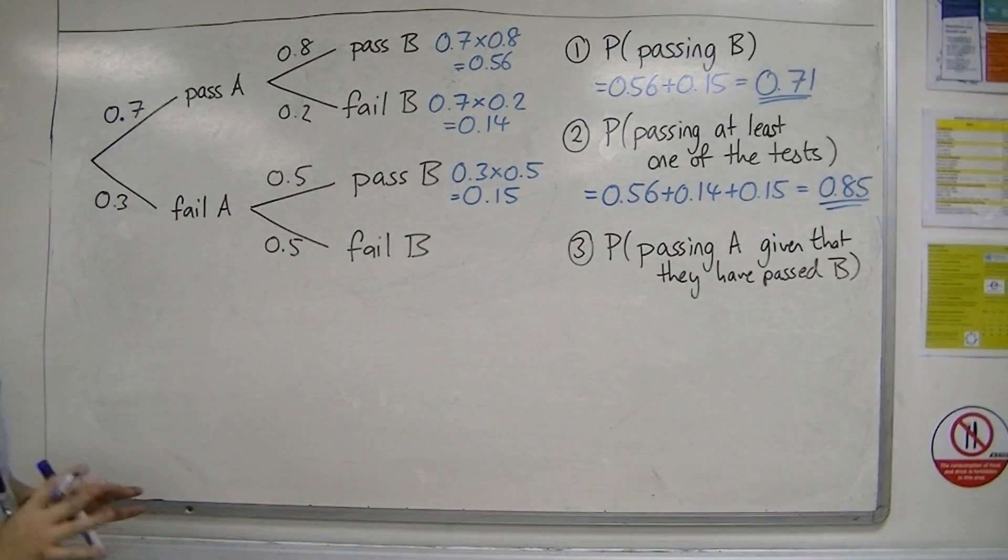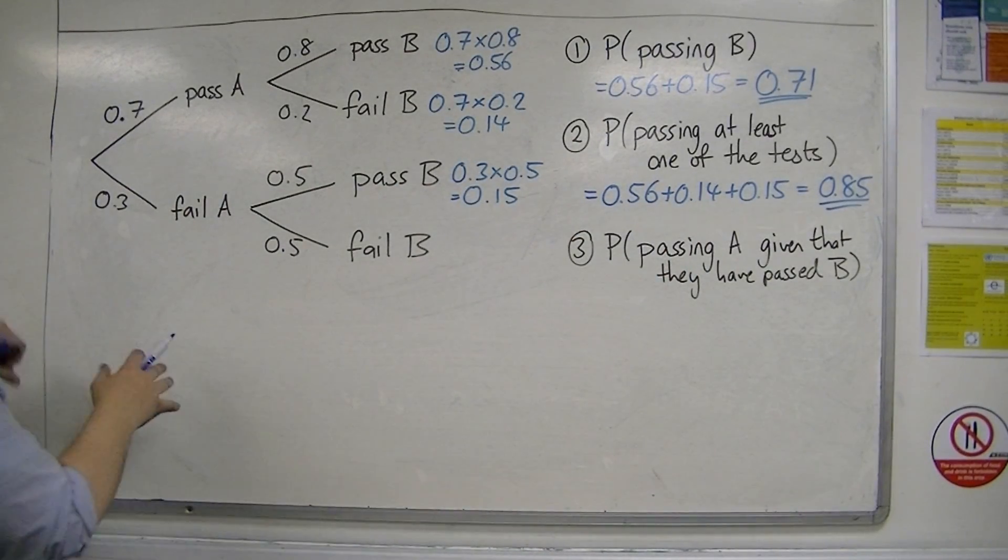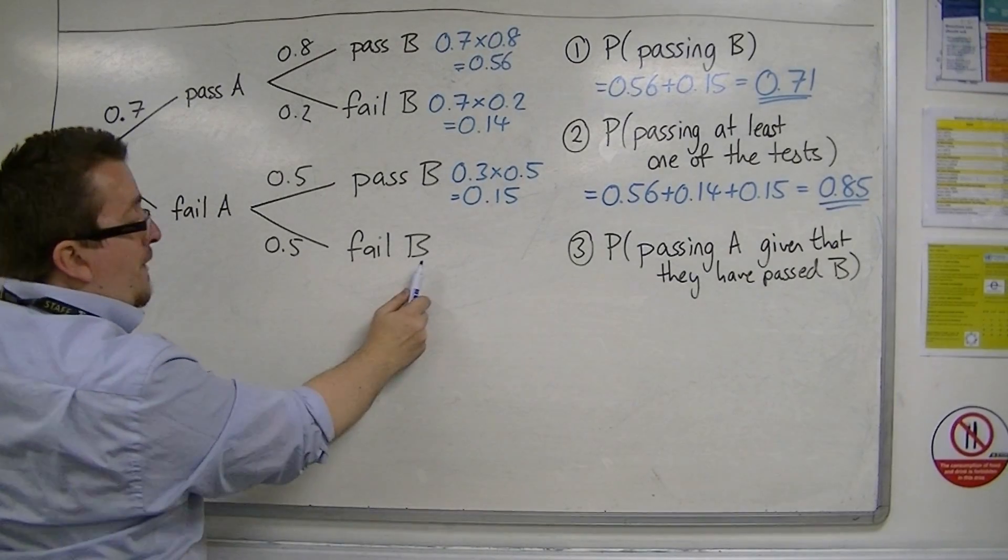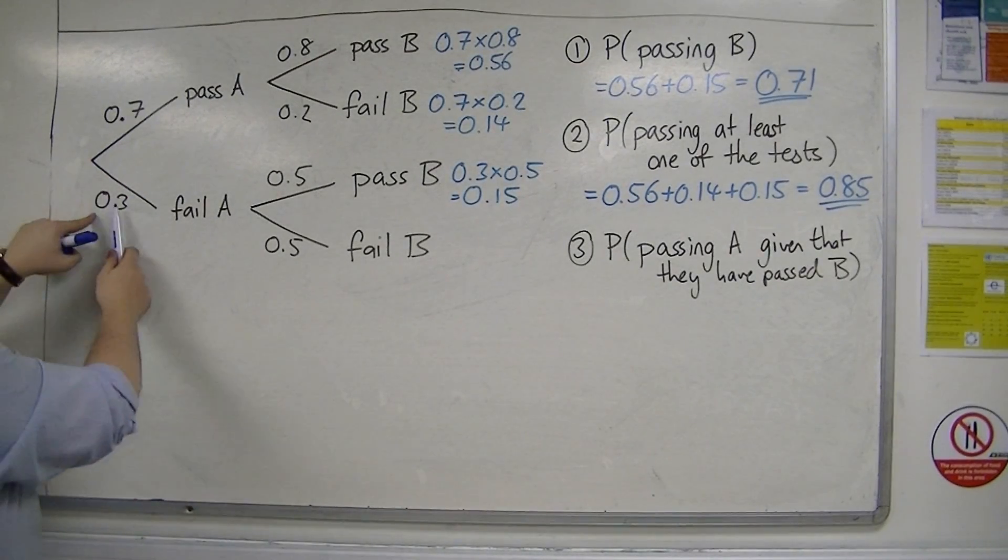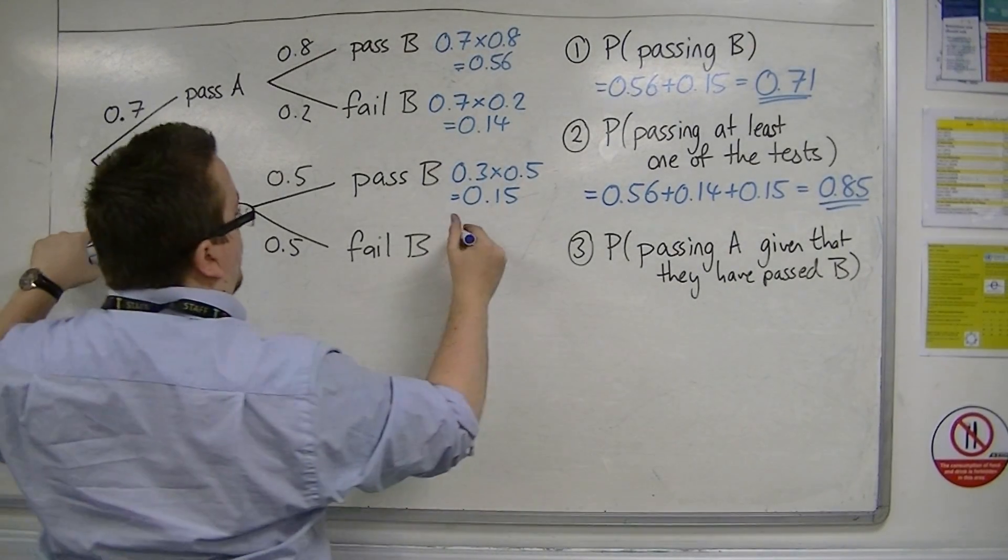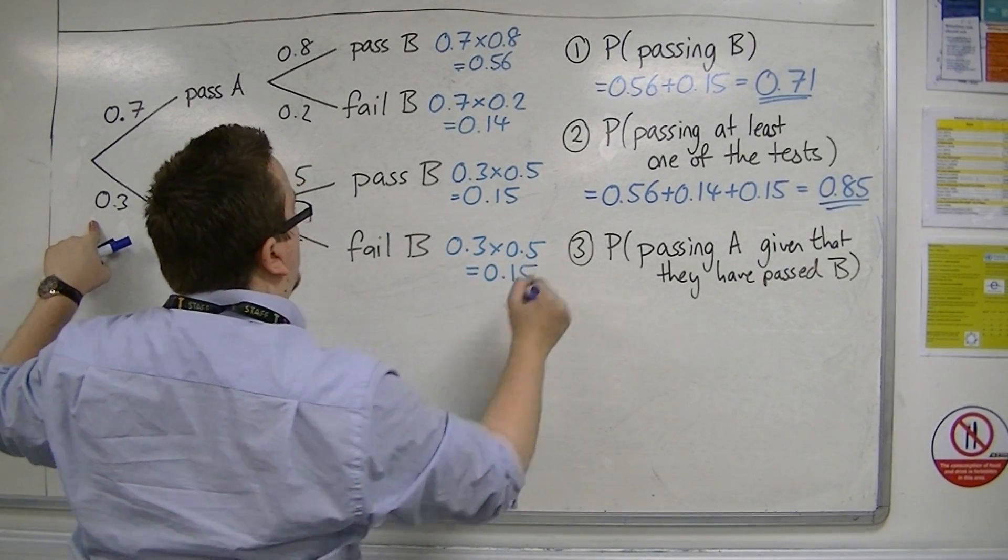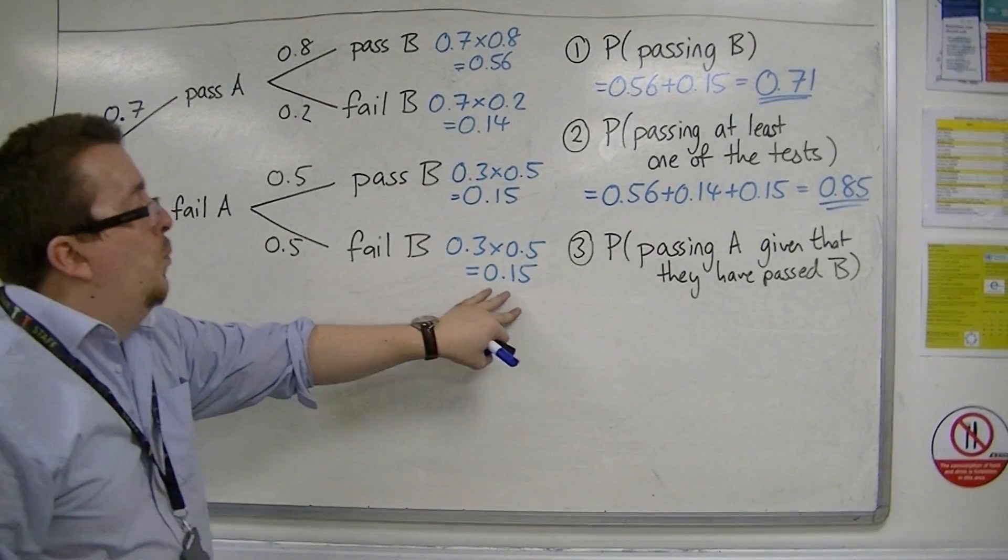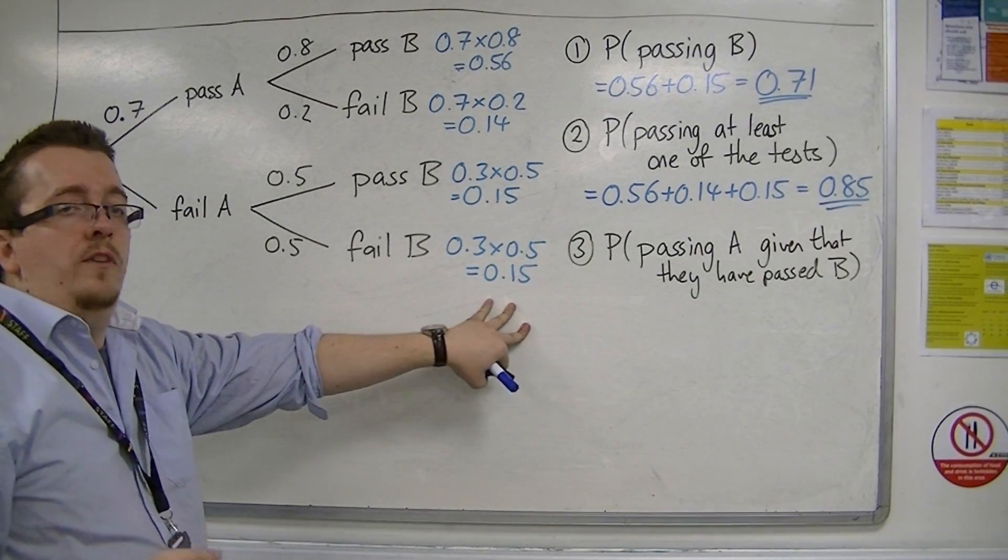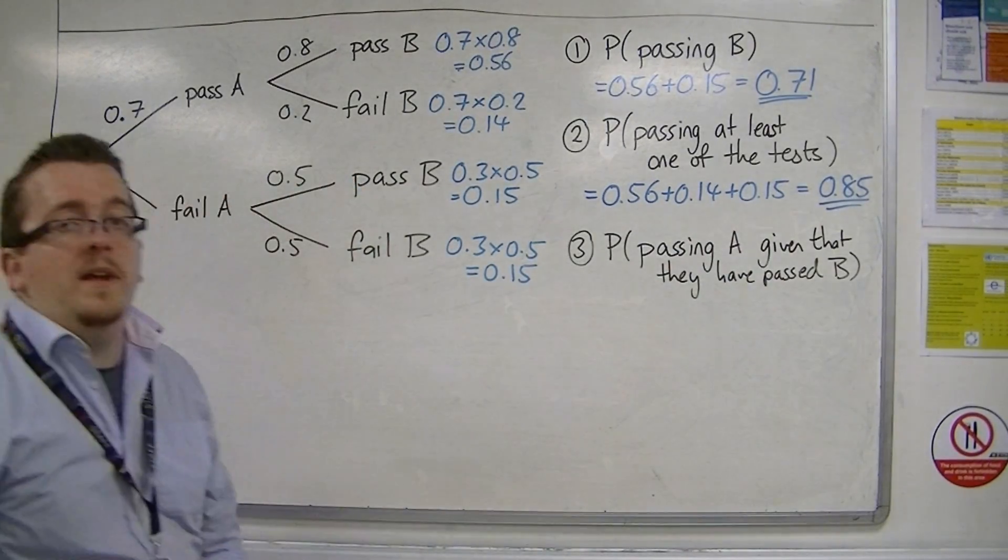You could also find that by doing one minus the probability of failing both tests. 0.3 times 0.5 is 0.15, so one minus 0.15 equals 0.85.